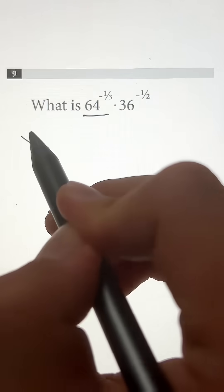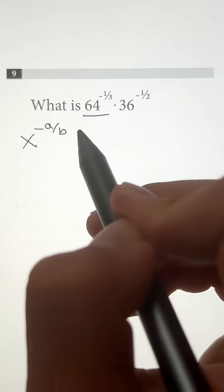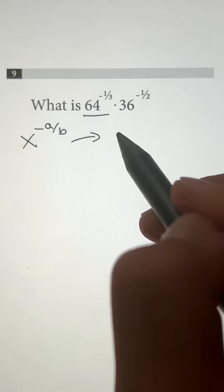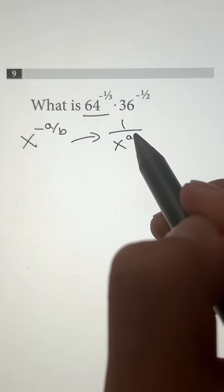So when we have something in the x to the negative a divided by b power, we can just rewrite that as 1 divided by x to the a divided by b power.